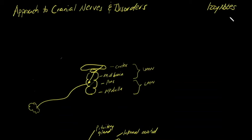Welcome to cranial nerve and their disorders. We are going to summarize, in a couple of sessions, how to approach cranial nerve abnormality. This is the clinical part, so we'll cover a little bit of neural anatomy, although the full neural anatomy is under the neural anatomy course.